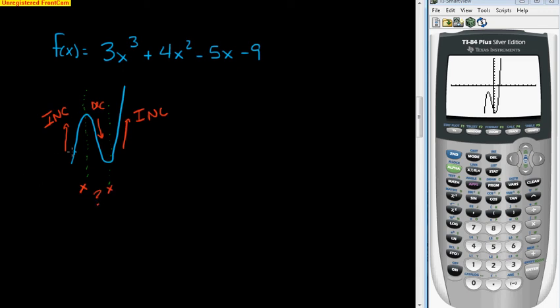So I know that between, on this interval, I'm going to be increasing. On this interval between these x values, I'm going to be decreasing. And then from this x value off here, I'm going to be increasing.